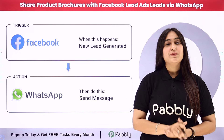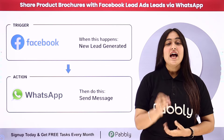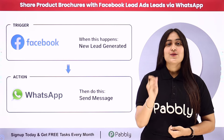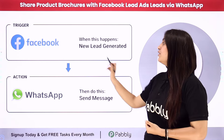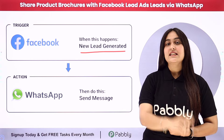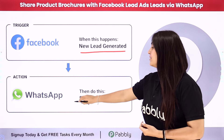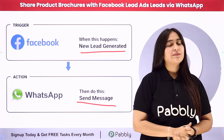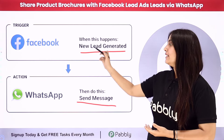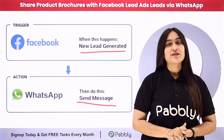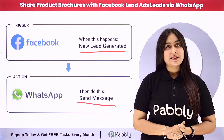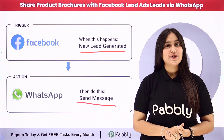I am working with an admission cell of a university and I am using Facebook lead ads to attract new admissions. Whenever a new lead is generated in my Facebook lead ad, automatically a WhatsApp message should be sent to that lead with my college brochure. To build this connection, I need to connect these applications using an automation software named Pabbly Connect.